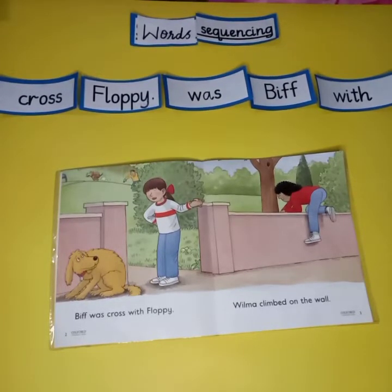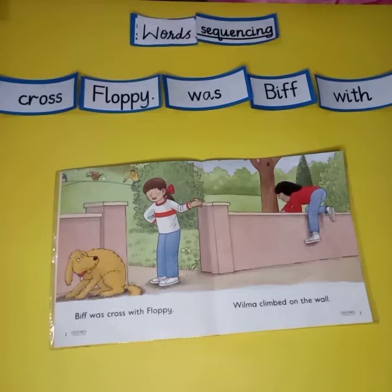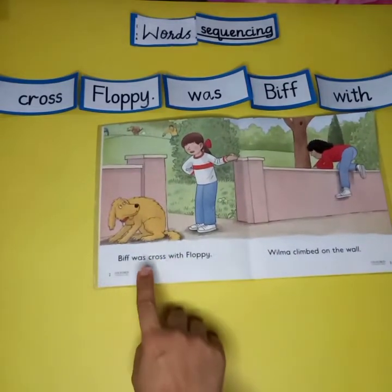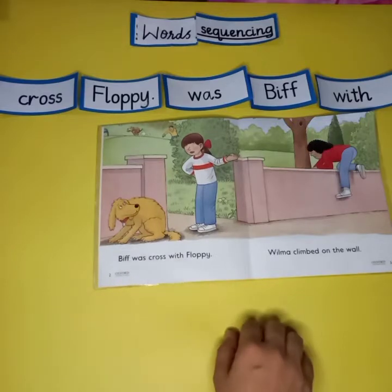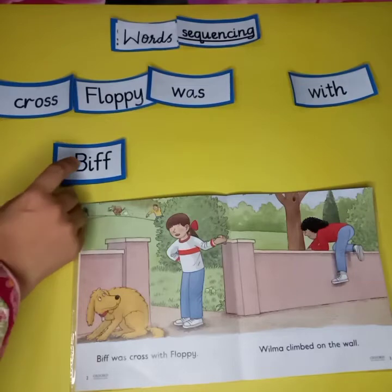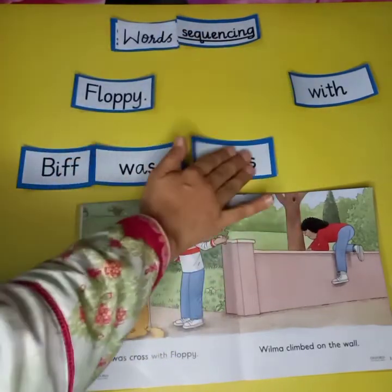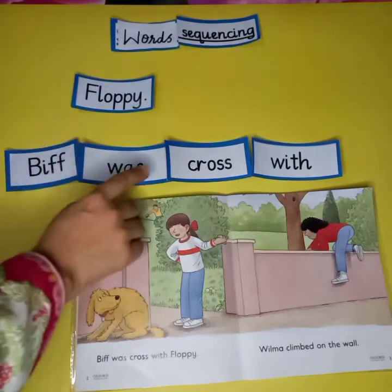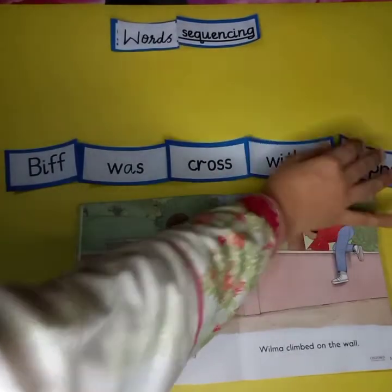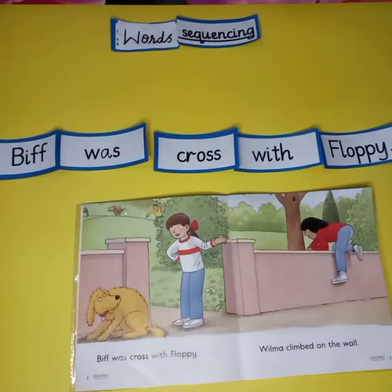Now let's try another example. The jumbled words are: 'cross floppy was biff with.' If you read your sentence two or three times it will start making sense in your mind. Let's check what was written in the reader. The sentence was 'biff was cross with floppy.' So we arrange: biff, was, cross, with, floppy. Here is our complete sentence — biff was cross with floppy. You guys did a great job!